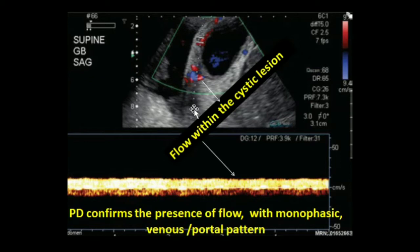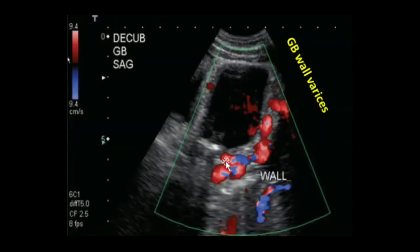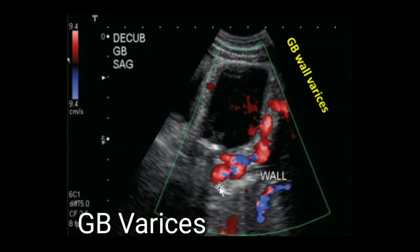By applying pulse Doppler it was confirmed that the flow is monophasic with a venous or portal pattern. This image also shows the presence of blood flow in the cystic lesions. The most important differential diagnosis of the gallbladder lesions is with gallbladder wall carcinoma.